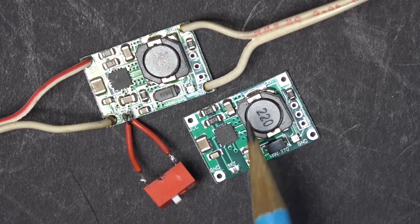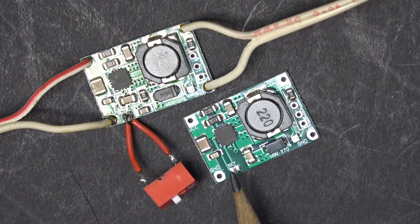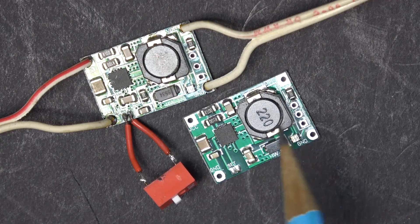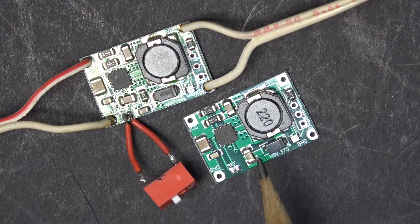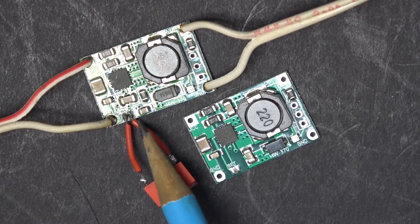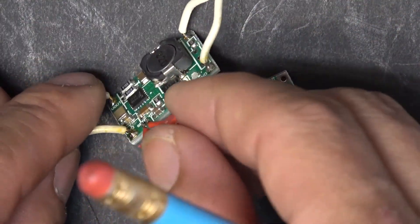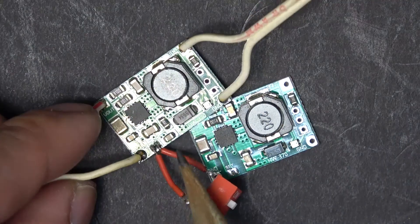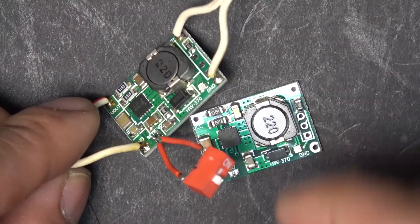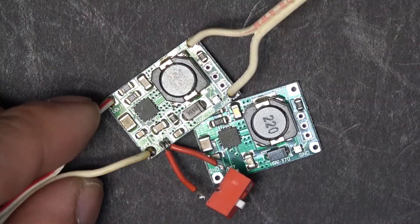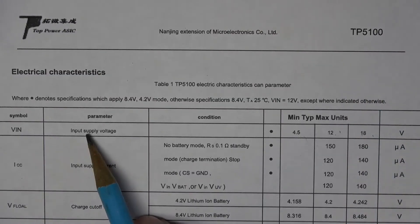On the TP5100 board we have two small soldering connections here. If these two are disconnected, the board will charge at 4.2 volts. If you connect these two terminals together, the board will charge at 8.4 volts. I soldered a couple of wires with a switch here so that if I turn on the switch, it will connect the two terminals together and the board will charge at 8.4 volts. If I turn this off, the board will charge at 4.2 volts.